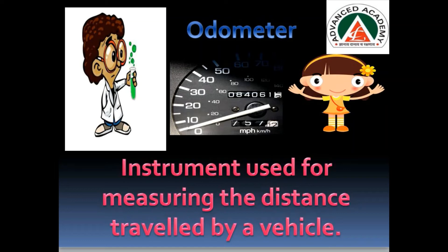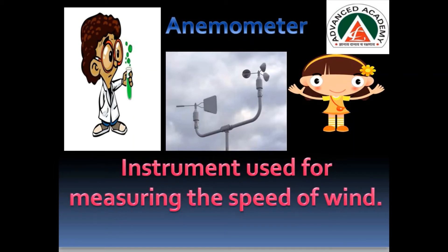Then uncle showed Pihu another instrument and told her, 'Pihu, this is an anemometer. It is an instrument used for measuring the speed of wind.' 'Oh! So the speed of wind is also calculated like this, uncle?' Pihu asked. Uncle said, 'Yes, Pihu. We have to calculate the speed of wind also, so we use an anemometer.'